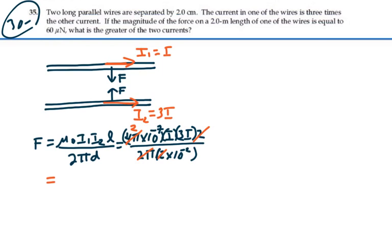And so we're going to end up with 2 times 3 which is 6I² times 10⁻⁷ over 10⁻².